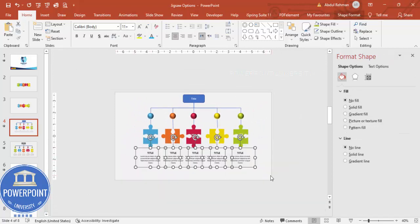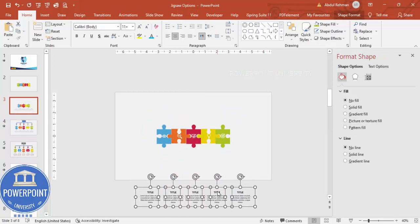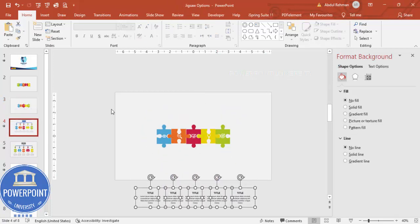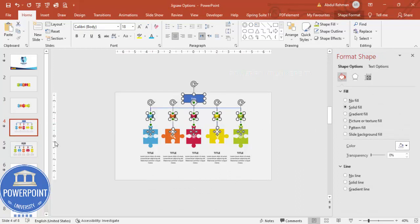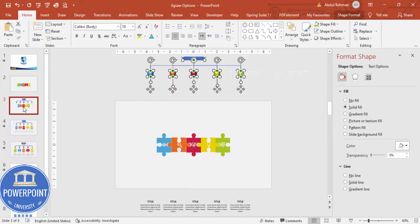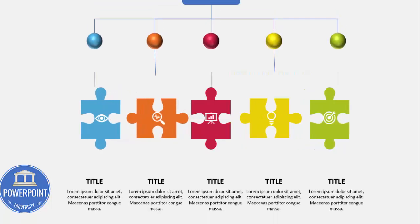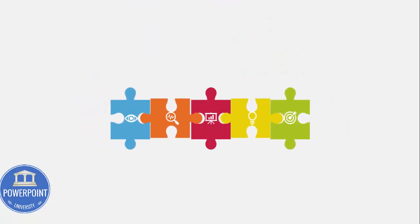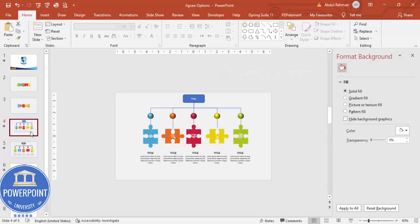Now I'm going to copy these elements, go to the first slide, and paste them. I'll bring them down into position. I'll also copy the other element with Ctrl+C, then Ctrl+V and bring it up. Now when I play the slideshow you can see it comes together like this. This is the way you can create this jigsaw puzzle slide.